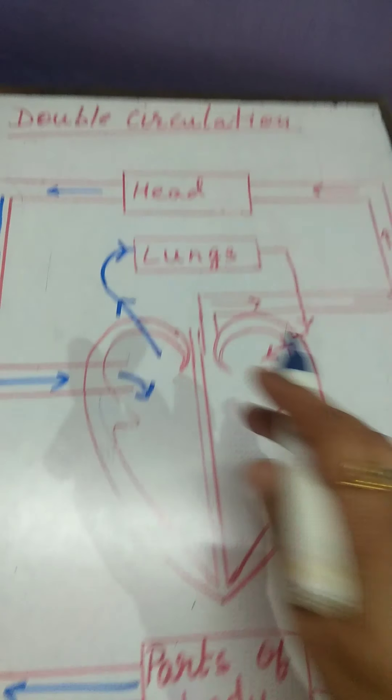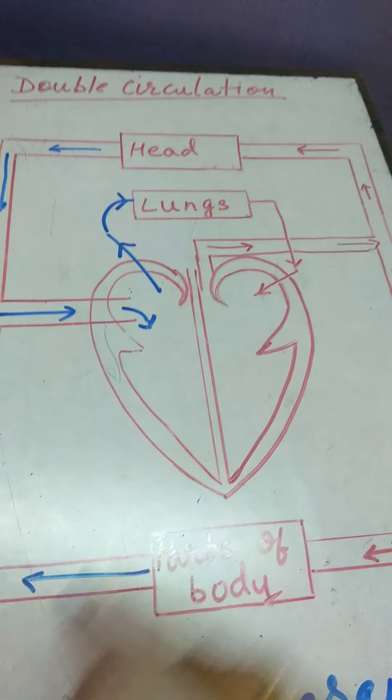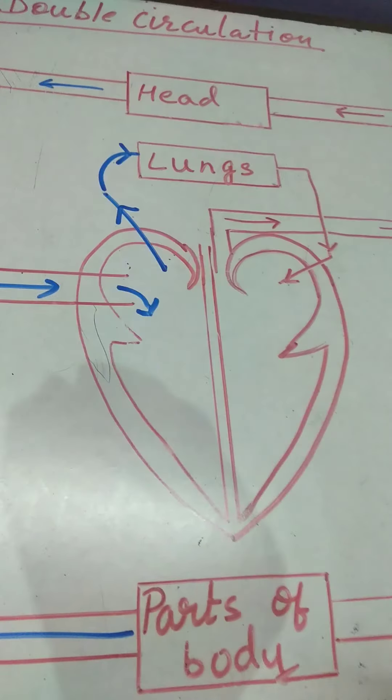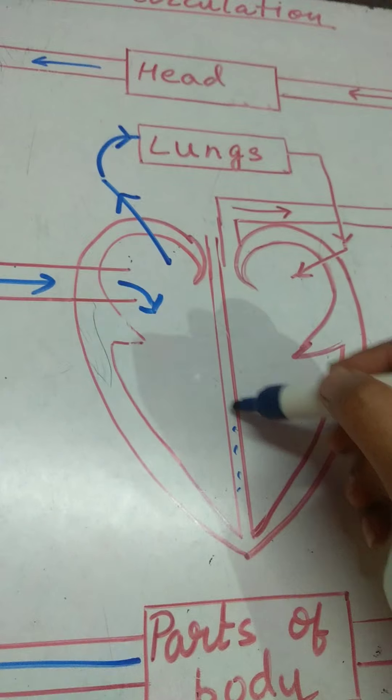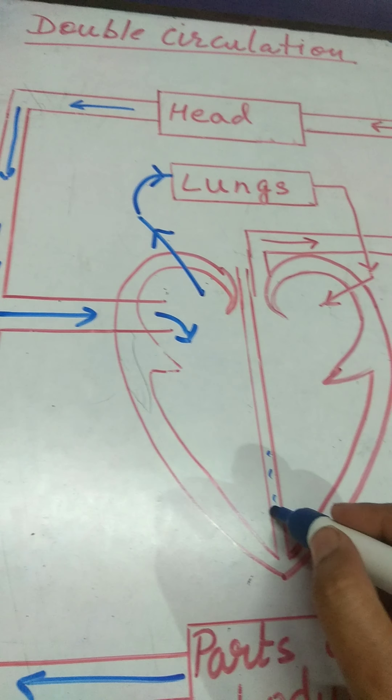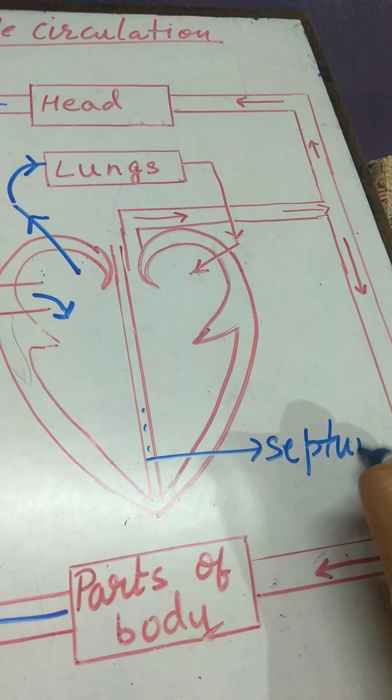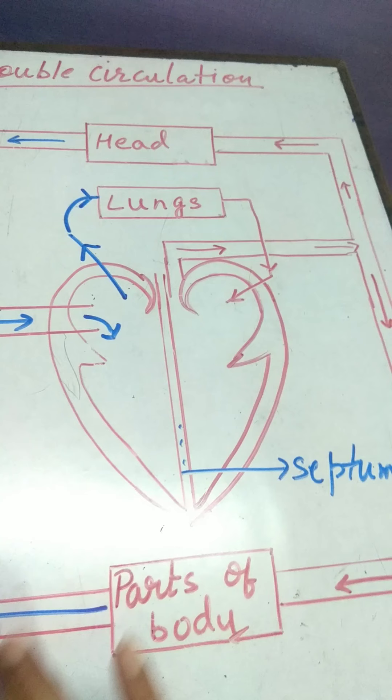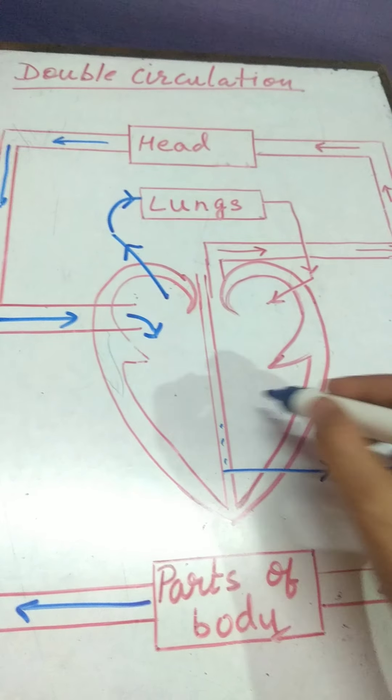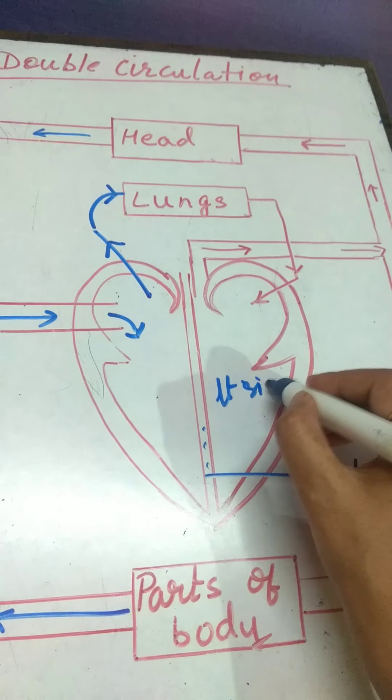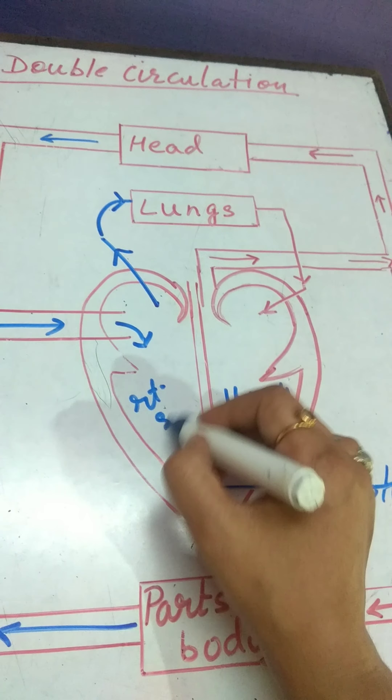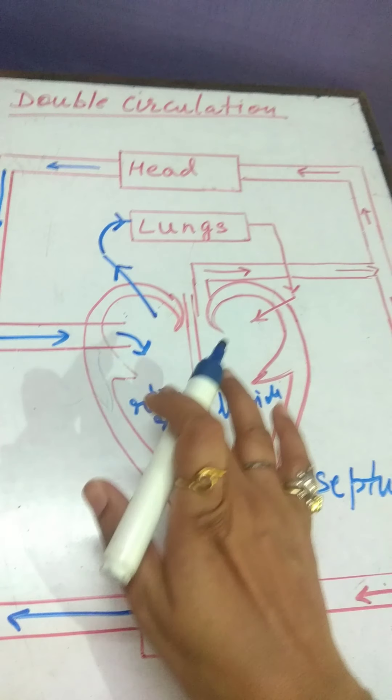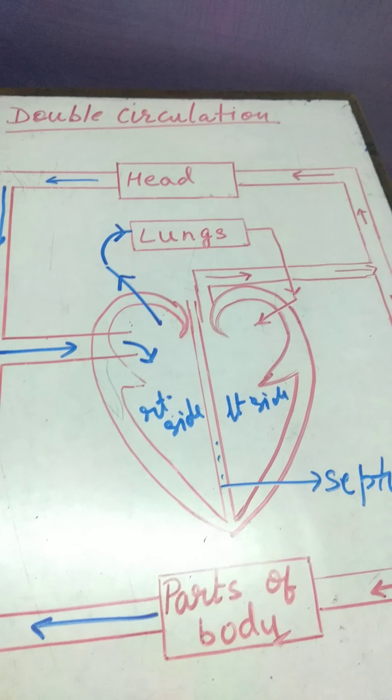I have told you previously that heart of human beings is four chambered, clear? So, I have told you that septum, this is the septum which divides heart into left and right part. This is left side of the heart and this is right side of the heart. Function of septum is to prevent mixing up of pure and impure blood.